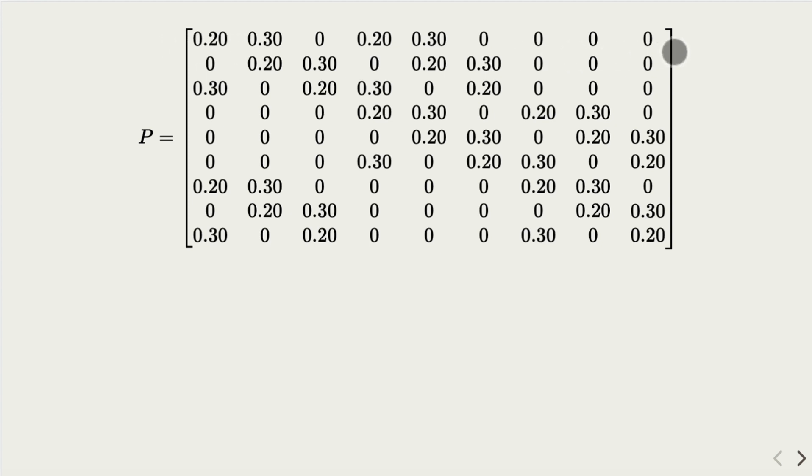So 9 by 9 matrix, each row, the number would add up to 1, representing the total probability that you have to move away from the current position, add up to 1.